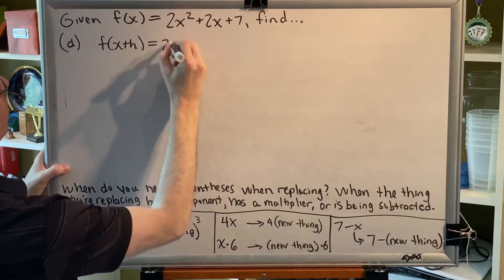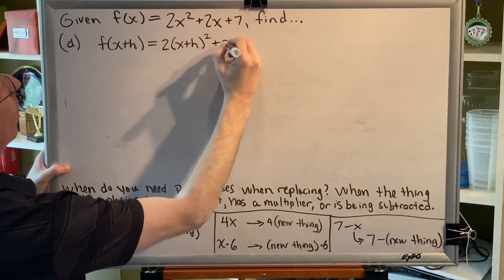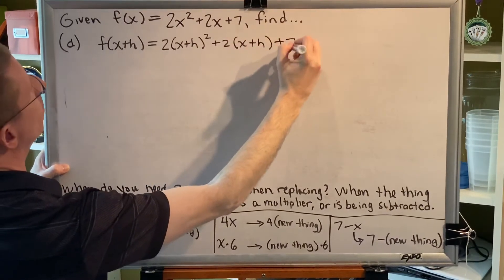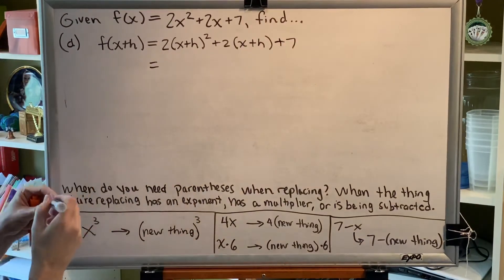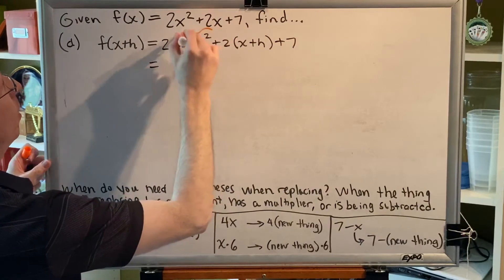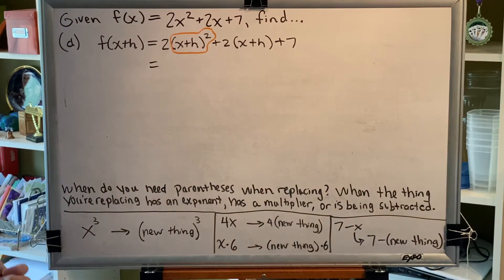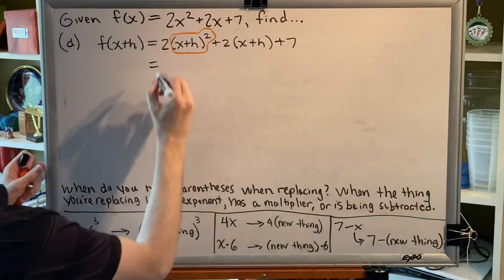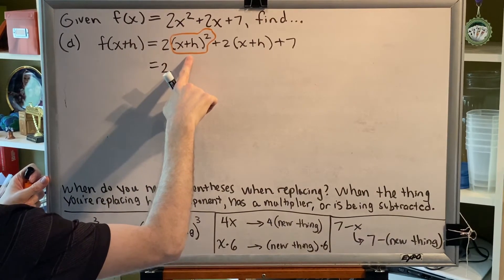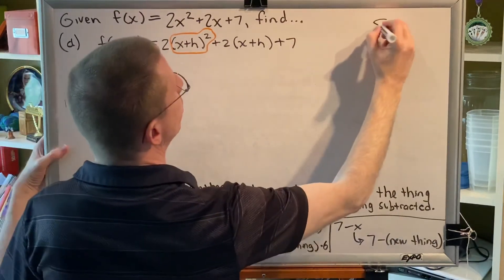So we have 2(x + h)² + 2(x + h) + 7. Just as in the previous problems, we're going to do the exponent first. But here we have to be very careful. The most common error that students make at this point in the problem is that they believe that this, in the orange circle, is equal to x² + h². Not true.